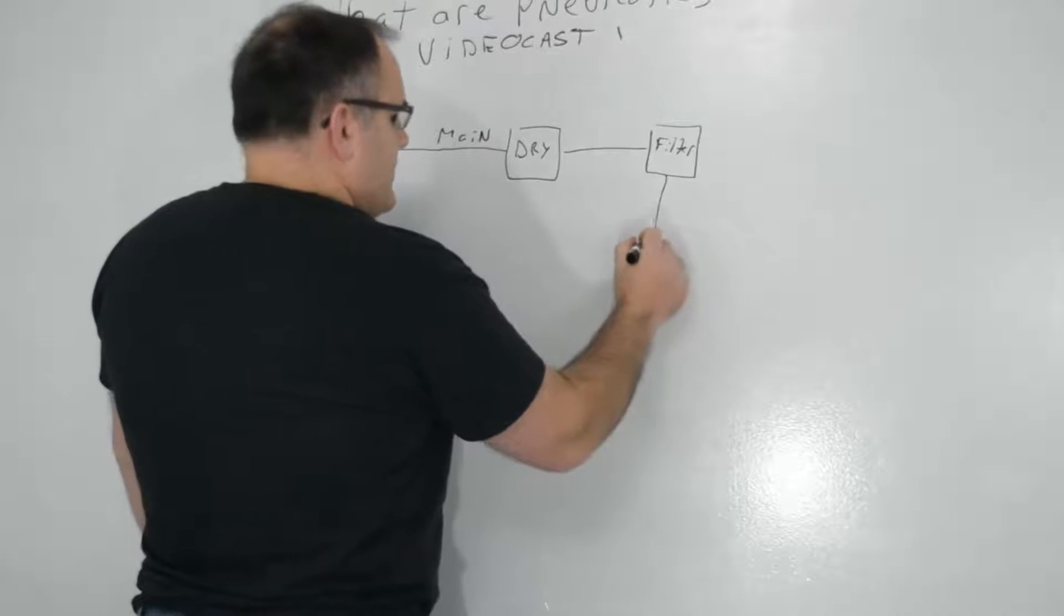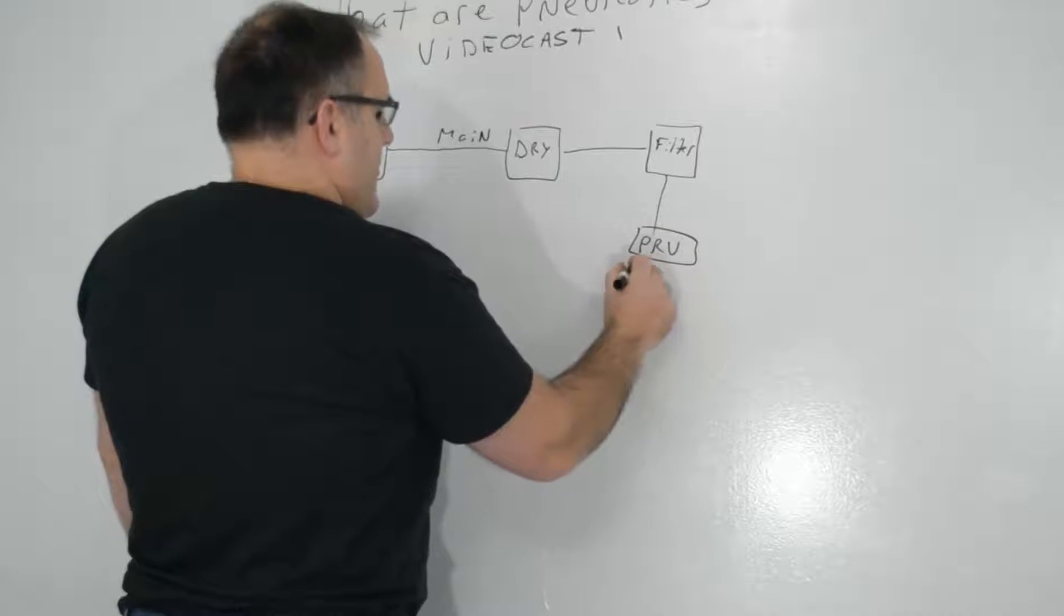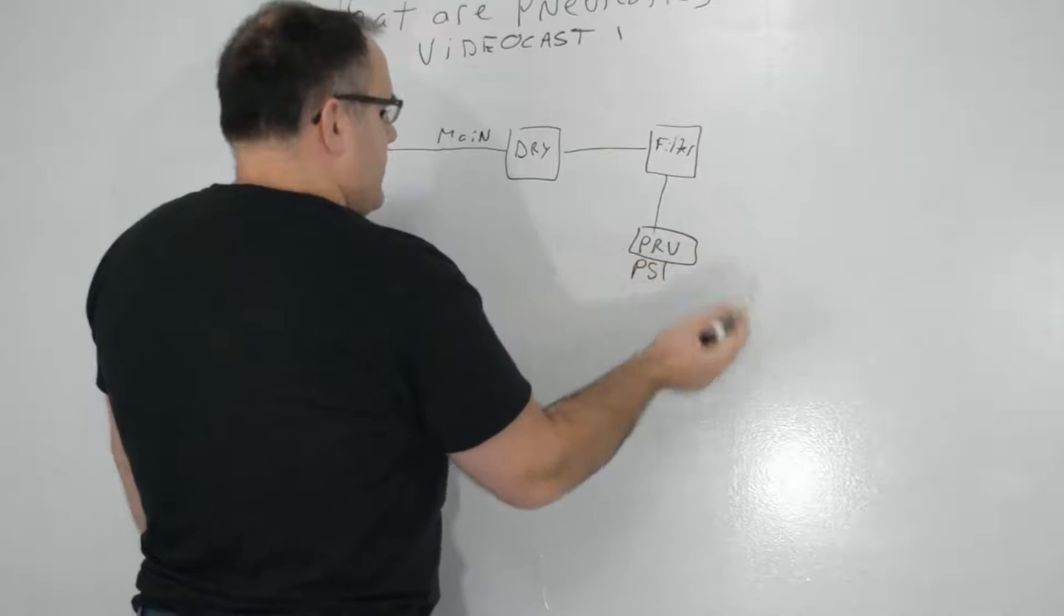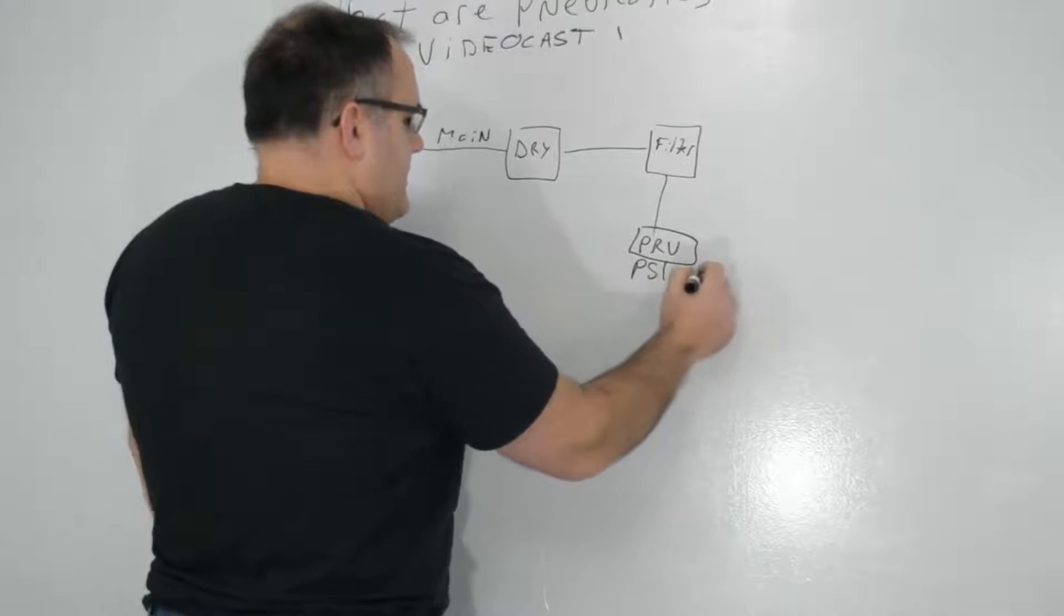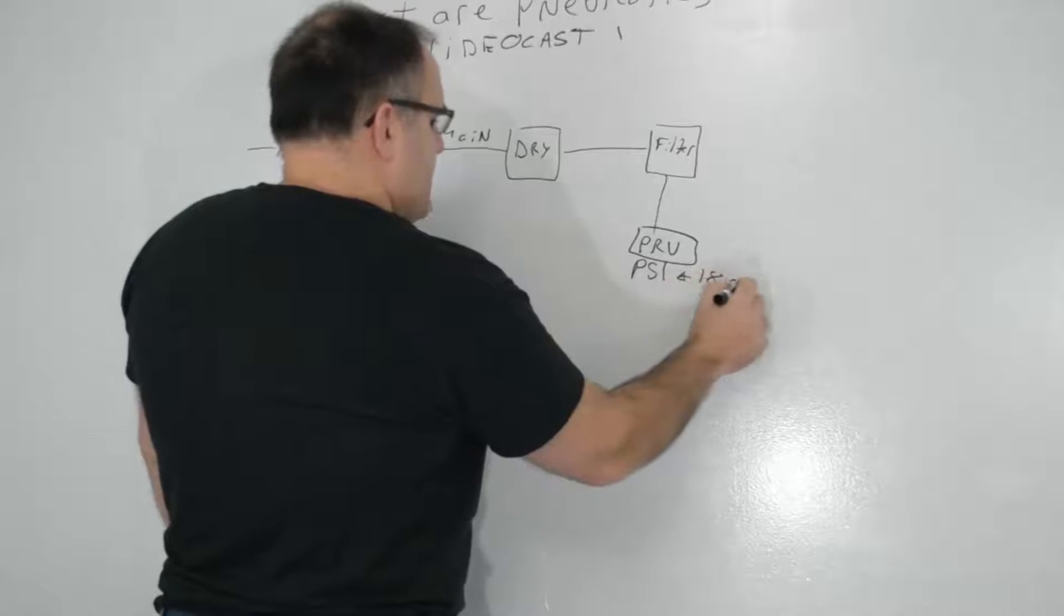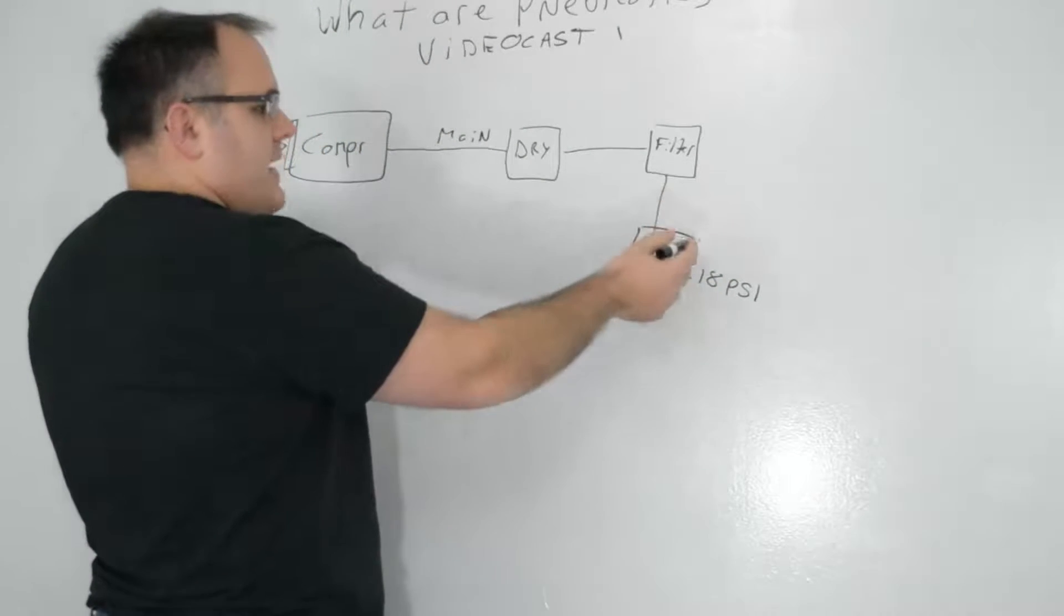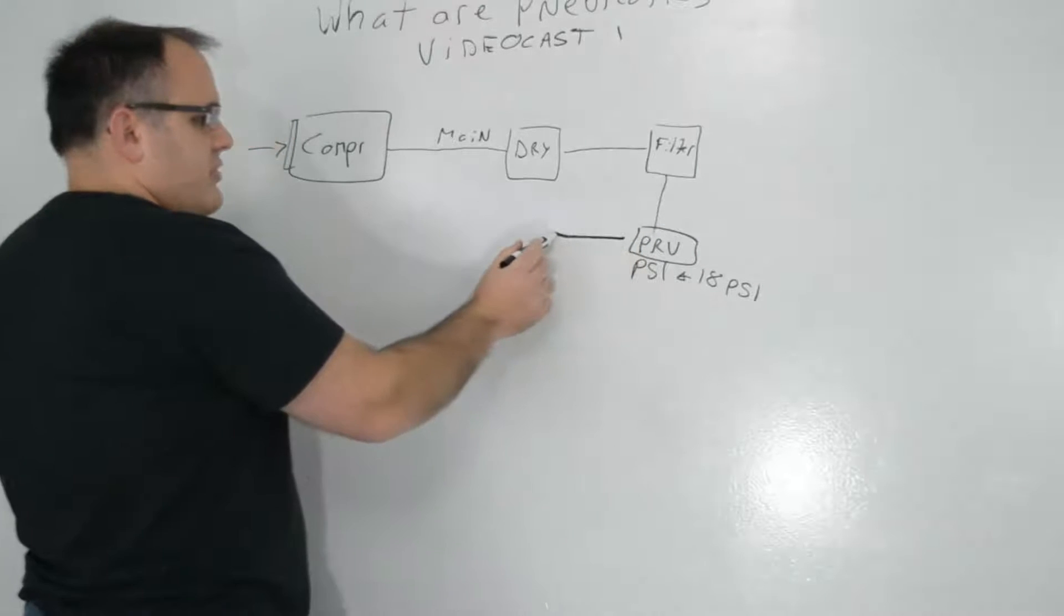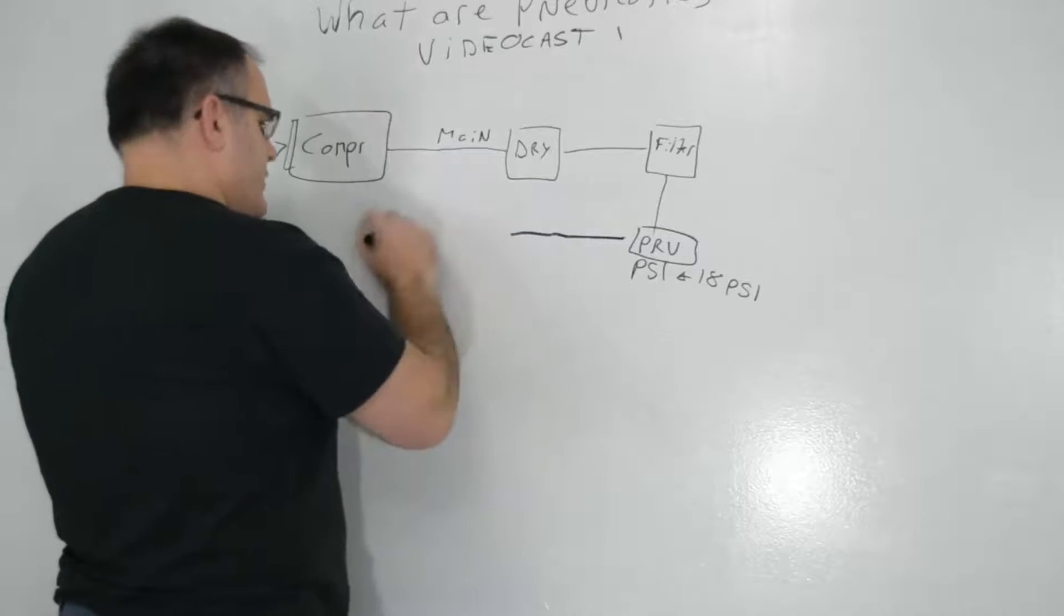So from here, you're going to go to what's called a PRV, which is a pressure reducing valve. Now you want to go and get your pounds per square inch or your pressure right there. You want to get that to be around 18 psi. So you're still using the main trunk and now from this pressure reducing valve,